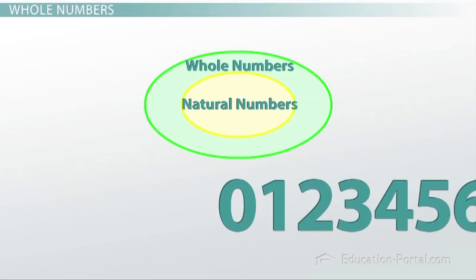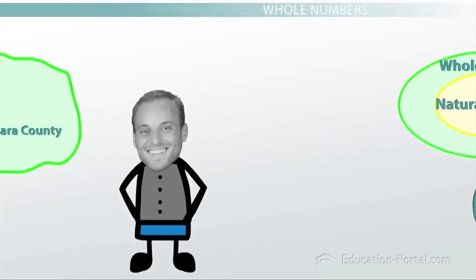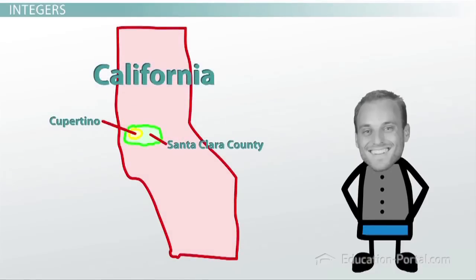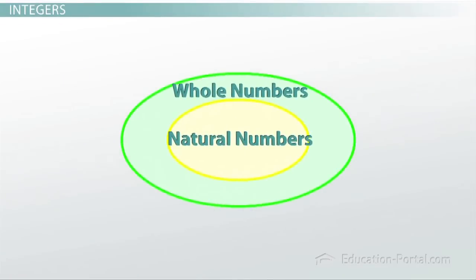Taking a step further back, in my situation, Cupertino and Santa Clara are both parts of California. Again, not everyone that lives in California lives in Santa Clara or even more specifically Cupertino. But if you live in Cupertino or Santa Clara, you're definitely living in California. Taking a step out in terms of the numbers brings us to what are called the integers.